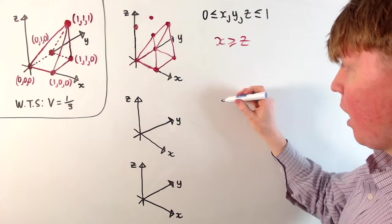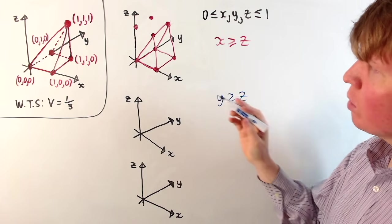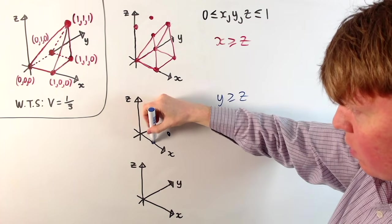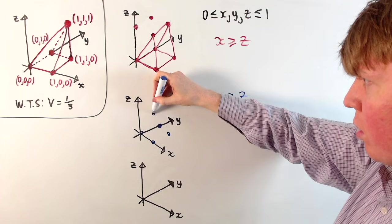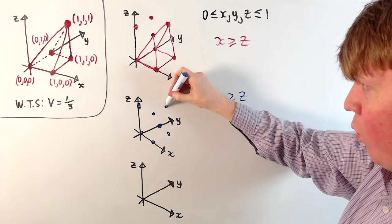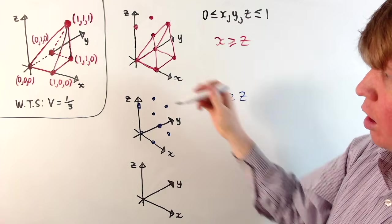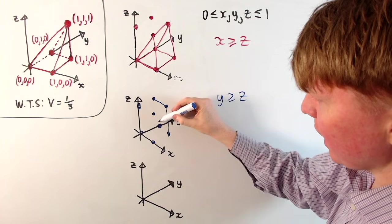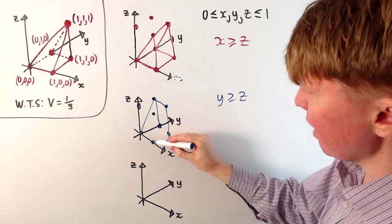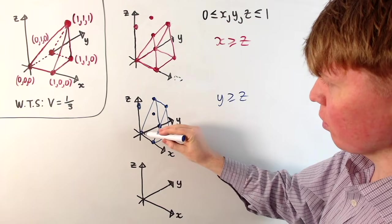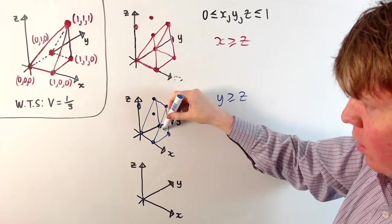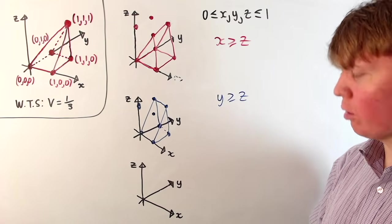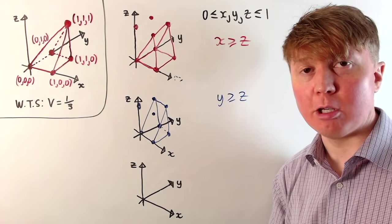We can do the same sort of thing for y greater than or equal to z. We've got a very similar looking picture — our unit cube once again, and the region where y is greater than or equal to z is again going to be another half of this cube, but it's the half where we have this face at the back. We also include the stuff at the bottom where z equals zero. So now we've got two different halves: one where x is greater than or equal to z, and one where y is greater than or equal to z.